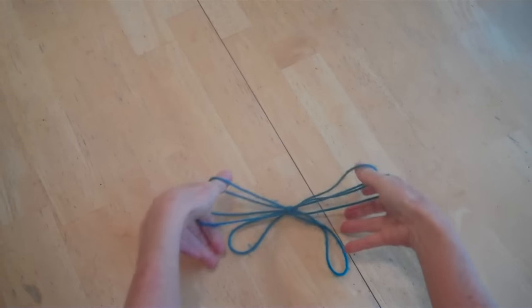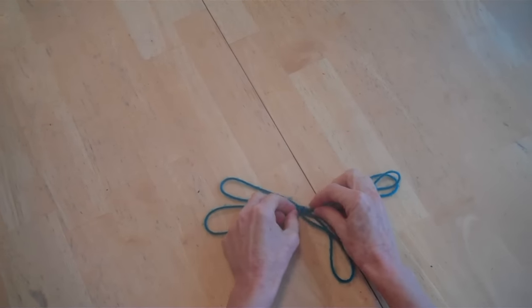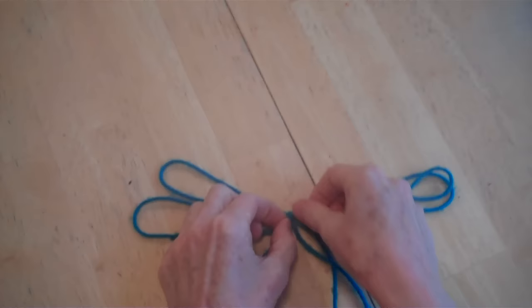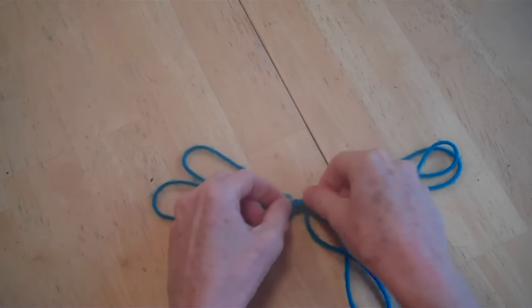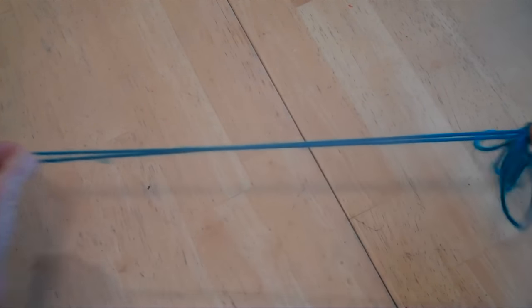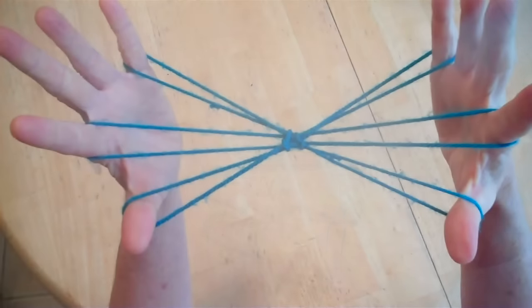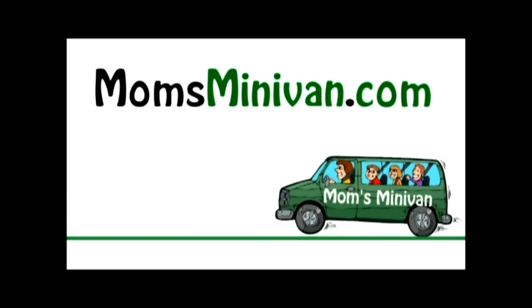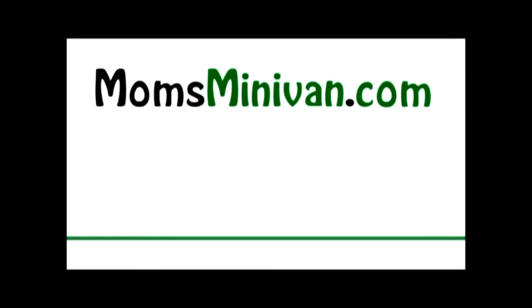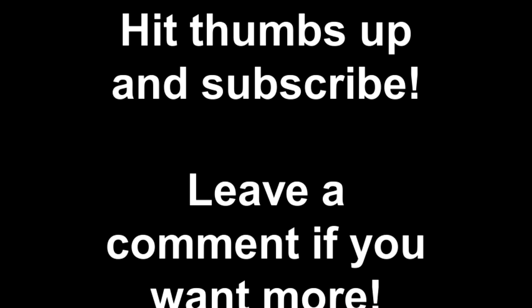Now to undo this one, lay it down. There's two strings on the back of the knot. Take each one and pull them. You can undo the string without getting it all tangled.